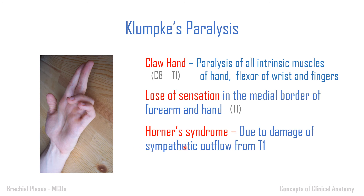The third feature is Horner's syndrome. The sympathetic outflow from the thoracic spinal cord starts from T1 to L1. When the T1 root is damaged, the sympathetic supply going toward the superior cervical ganglion — and supplying the head and neck — is affected. This means the sympathetic supply to the ipsilateral side of the face is disrupted, leading to Horner's syndrome: ptosis and anhidrosis.